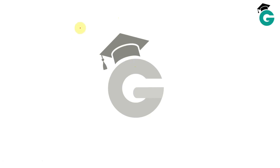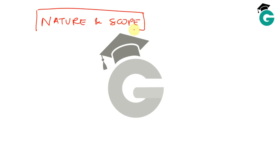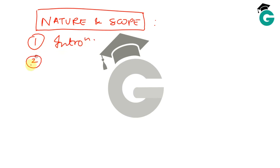In this video we're going to be starting with the first unit of econometrics, which is essentially the nature and scope of the subject. I'd like to cover two things: an introduction to what the subject is and what it does, and second, an example that talks about the first kind of econometric equation.